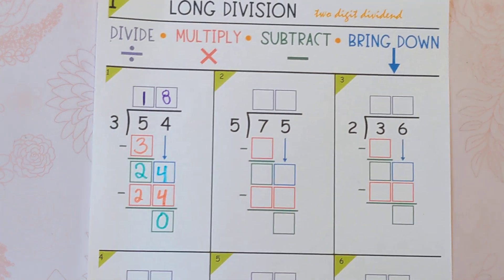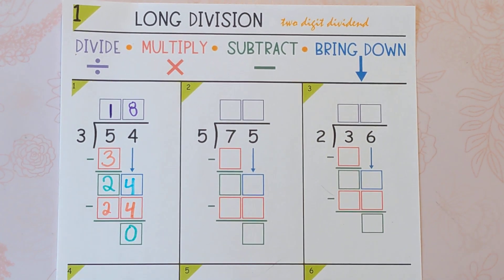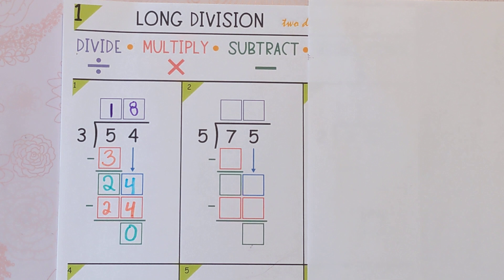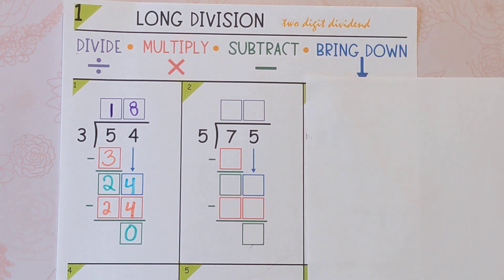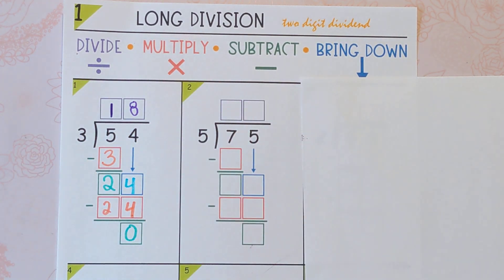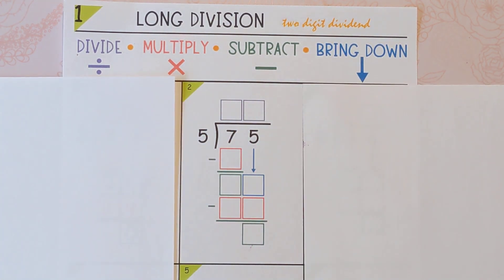Hi everybody, this is Mrs. Clark. We're going to do long division with the standard algorithm. We're going to try 5 into 75, or 75 divided by 5, and we're using the standard algorithm: divide, multiply, subtract, bring down. So feel free to follow along on a piece of paper or if you have these worksheets you can use them.